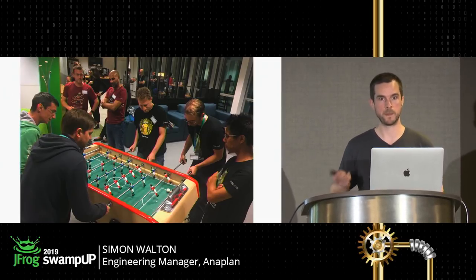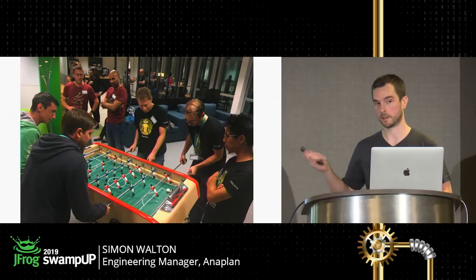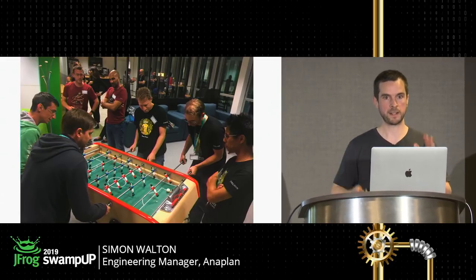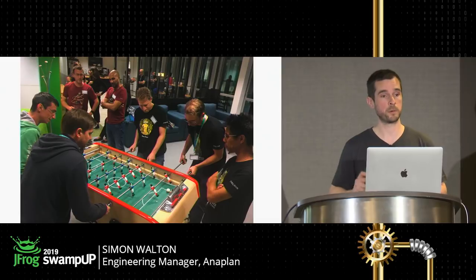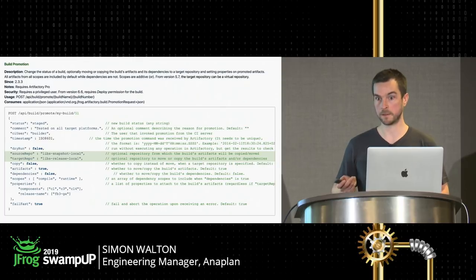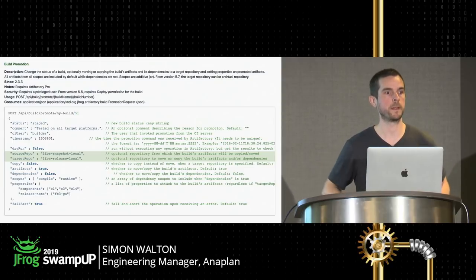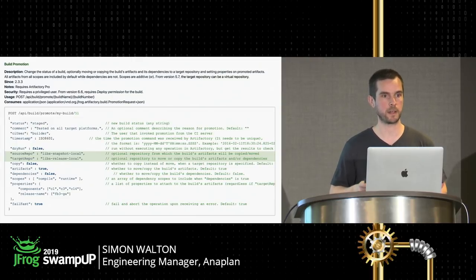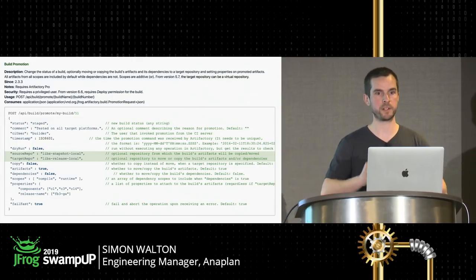JFrog pointed out a couple of problems: first, there's no way to do Docker promotions using the public API — I'll show you how to handle that later. They also said that fundamentally, build promotions and Docker promotions in Artifactory are two different endpoints, two different ways of promoting things. When you promote a build in Artifactory, you're usually saying 'I've got a source repository and a target repository' — moving Maven outputs up the chain — and it's not really geared around picking things together and moving them as a set.